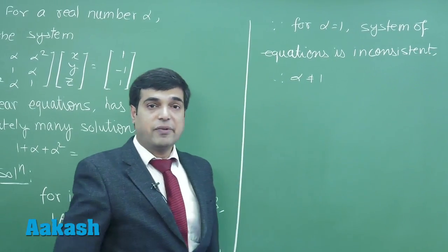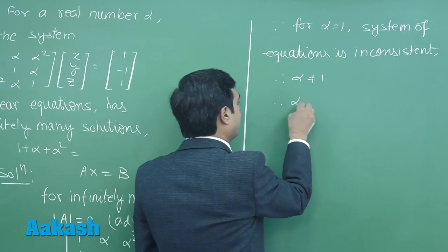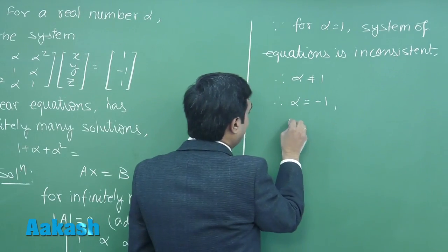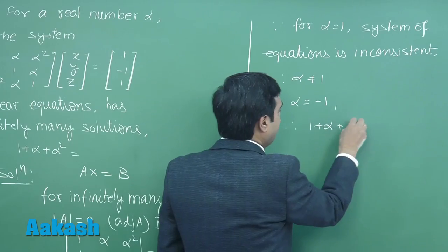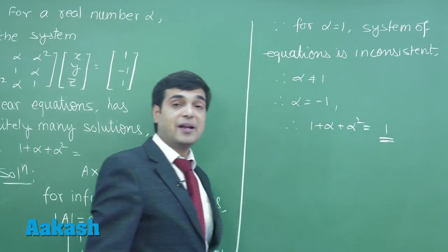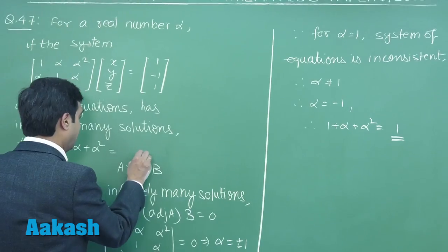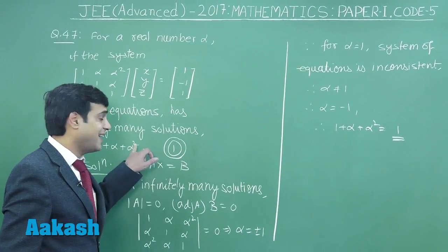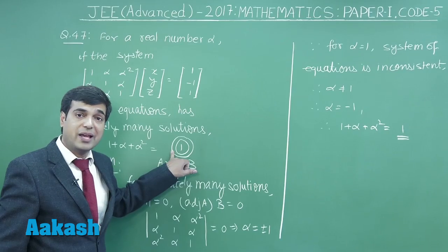So alpha takes the value -1. On substituting it, we get 1 + alpha + alpha² = 1. So the correct answer for this question is 1. The value of 1 + alpha + alpha² as required comes out as 1.